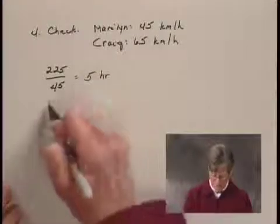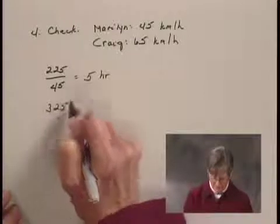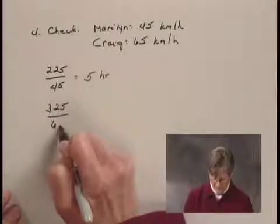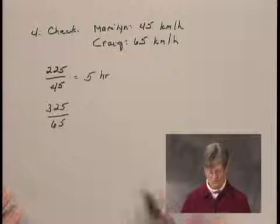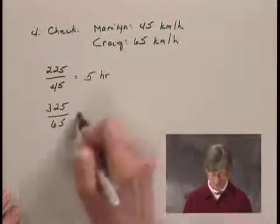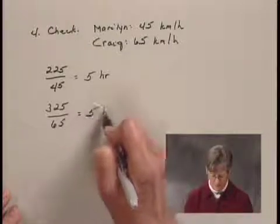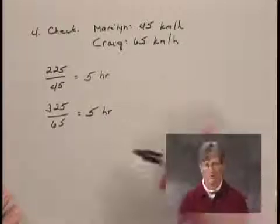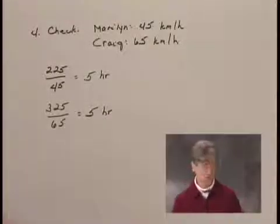And if Craig travels 325 kilometers at 65 kilometers per hour, the time it takes him to do this is 325 divided by 65. And that's also 5 hours. So the times are the same and that tells us then that the answer checks.